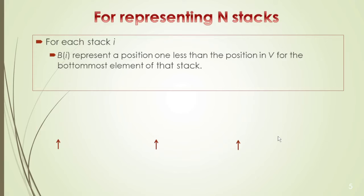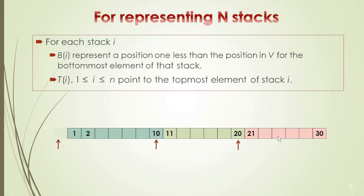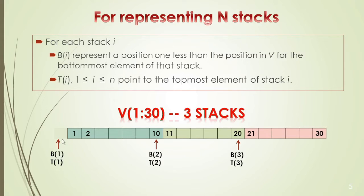For each stack, we define B[i] as the bottom pointer and T[i] as the top pointer. For example, the first stack spans 1 to 10, with B[1] and T[1]. The second stack has its own B[i] and T[i]. Each stack grows upward from its base. B is the bottom-most element and T is the top of the stack.